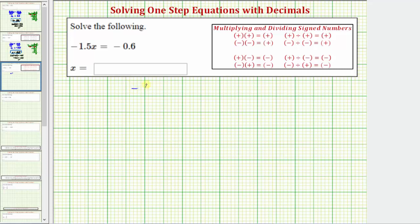We want to solve the equation negative 1.5x equals negative 0.6. We can also read this equation as negative 1 and 5 tenths x equals negative 6 tenths.